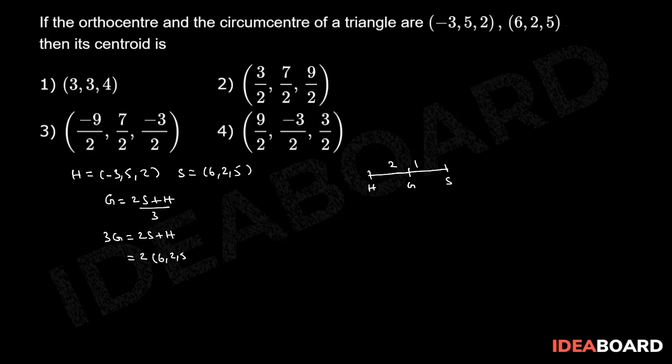That implies 2 times (6, 2, 5) plus (-3, 5, 2), which equals (12, 4, 10) plus (-3, 5, 2).